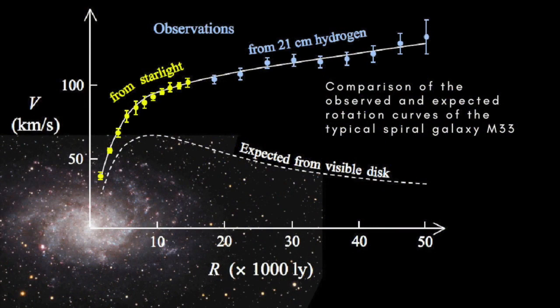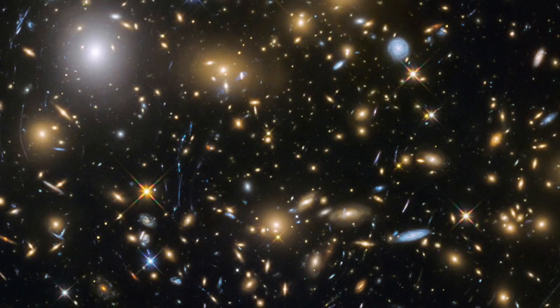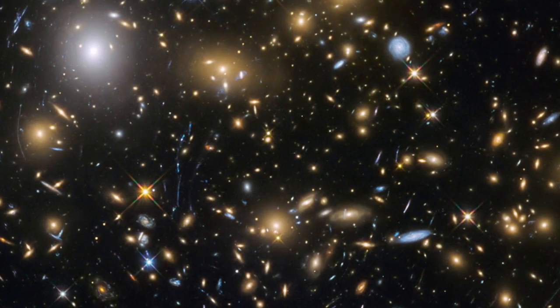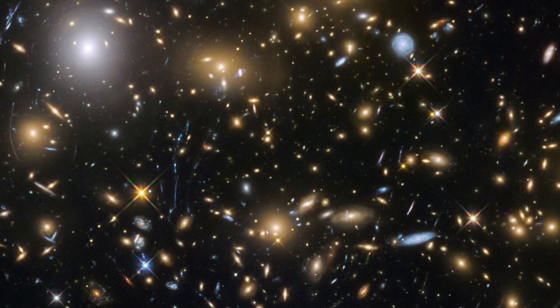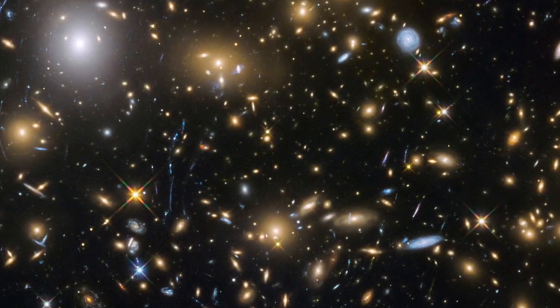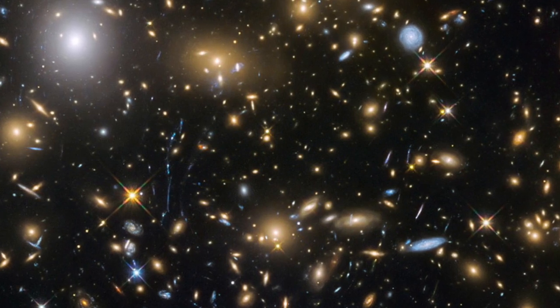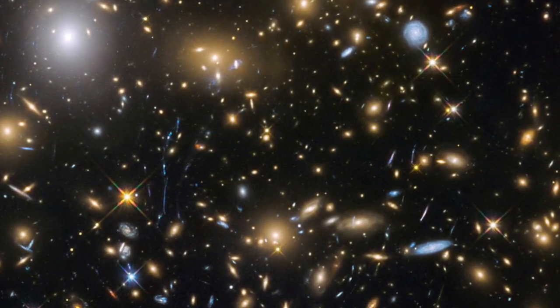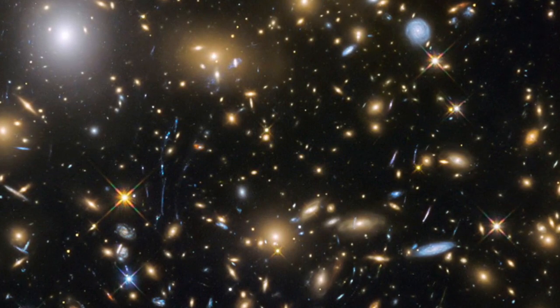MOND has been quite successful at explaining the anomalous rotation of individual galaxies — the fact that their outer parts rotate faster than expected based on the amount of visible matter they contain. Where it's been less effective is in accounting for the motions of galaxies in clusters. Even if we go along with MOND, the mass of galaxy clusters is still typically twice what can be accounted for by ordinary matter, so MOND doesn't do away with the need for dark matter in clusters.